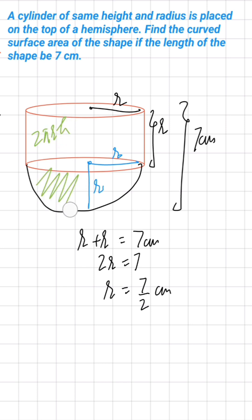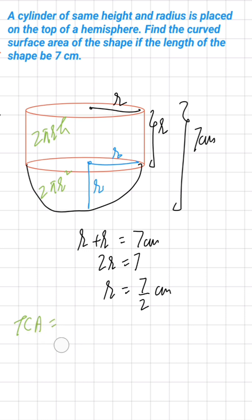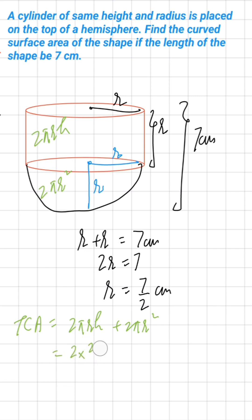The curved surface area of the hemisphere is found with the formula 2πR². Adding them together gives the total curved surface area. So total CSA = 2πRH + 2πR², where π = 22/7.